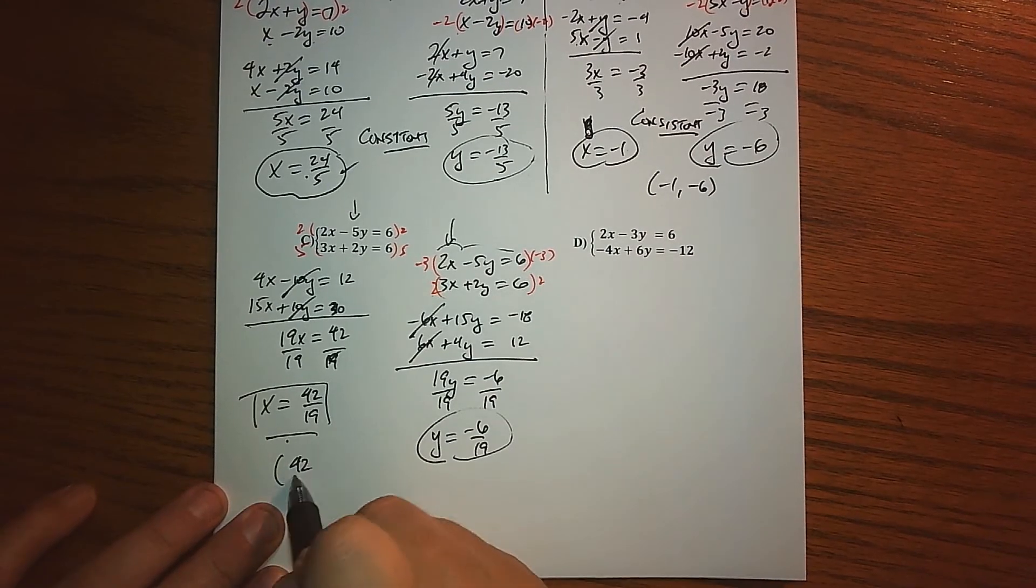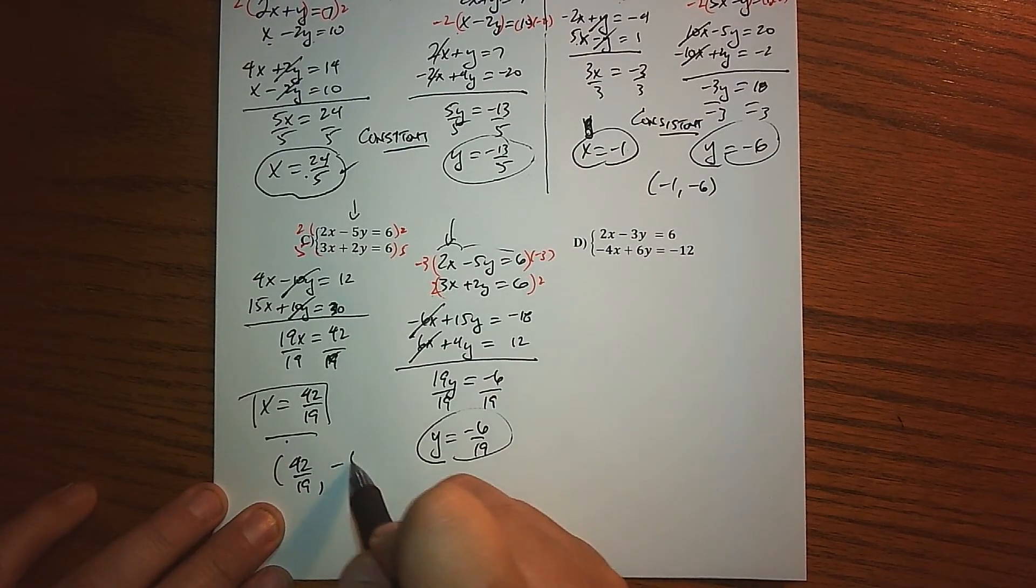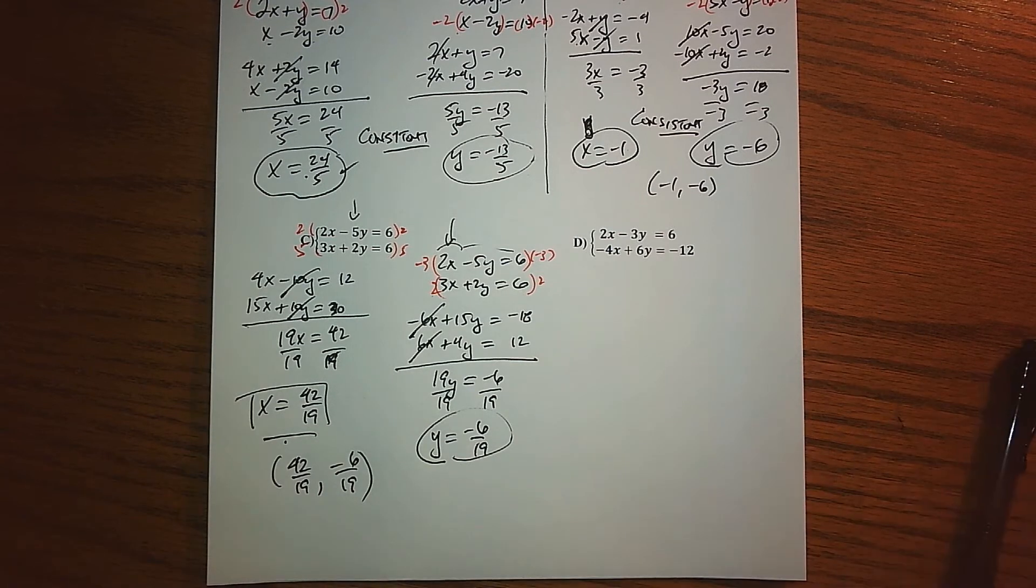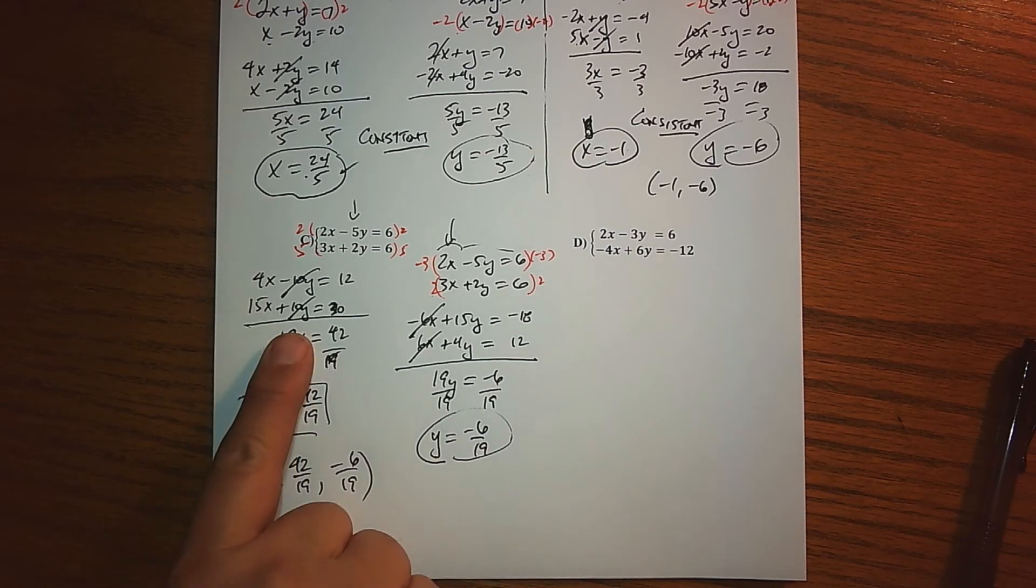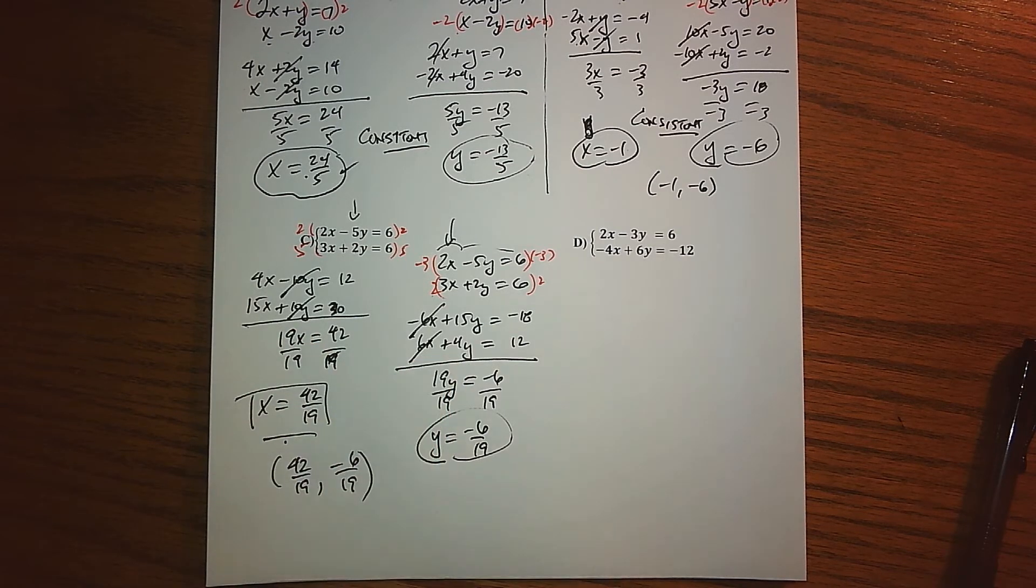Divide by 19 and we get our solution for Y. Our ordered pair that solves this system is not a pretty one, but that's the ordered pair that makes that situation true: 42 over 19 and negative 6 over 19. We used the elimination method, and that's about as hard as it's going to be. We had to multiply both equations by something to accomplish what I wanted—to get the coefficients as opposites.